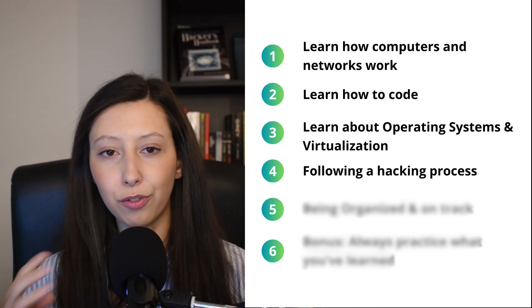My fourth step is following a hacking process. A hacking process is a series of steps that ethical hackers follow to find security problems in computer systems. It's useful because it provides a structured approach to identify vulnerabilities. The process I follow starts with reconnaissance, which is information gathering — hackers collect as much information as they can about the target to understand what they are dealing with. The next step is scanning, where you use tools to scan the target's network to discover open ports, active services, and other technical details.